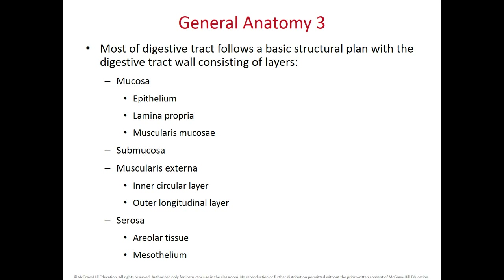Beneath the mucosa we have the submucosa, which contains glands that produce either enzymes or mucus. The lumen — the internal part where food is transferred — must be kept moist, and this moisturization comes from the submucosa's glands secreting mucus into the lumen. Beneath the submucosa is the muscularis externa, which — with the exception of the stomach — has two layers: the inner circular layer and the outer longitudinal layer.